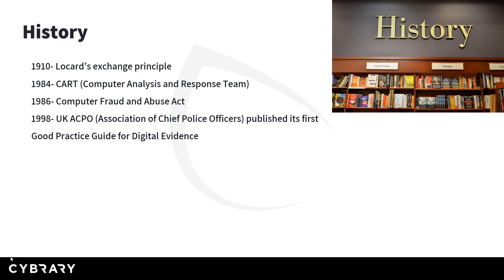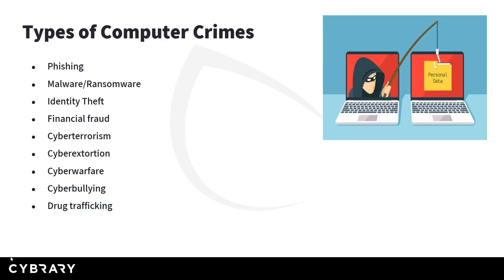Another notable milestone: in 1986, the Computer Fraud and Abuse Act was passed. We'll discuss that later in the module. Different types of computer crimes you might see include phishing, malware, and ransomware, which often go alongside each other.